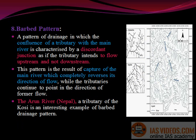Barb pattern: A pattern of drainage in which the confluence of a tributary with the main river is characterized by a discordant junction, as if the tributary intends to flow upstream and not downstream. This pattern is the result of capture of the main river, which completely reverses its direction of flow, while the tributaries continue to point in the direction of former flow. The Arun River, Nepal, a tributary of the Kosi, is an interesting example of a barbed drainage pattern.